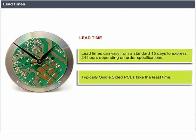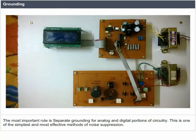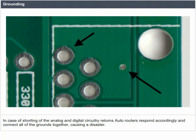Grounding: good grounding is a system-level design consideration that should be planned into the product from the first conceptual design. The most important rule is separate grounding for analog and digital portions of circuitry, which is one of the simplest and most effective methods of noise suppression. One or more layers on multilayer PCBs are usually devoted to ground planes. If the designer is not careful, analog circuitry will be connected directly to these ground planes, and if analog and digital circuitry returns are shorted, auto routers connect all grounds together, causing a disaster.